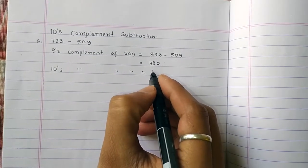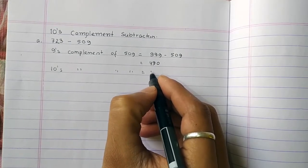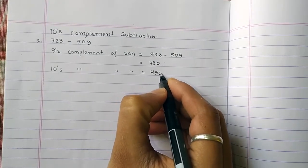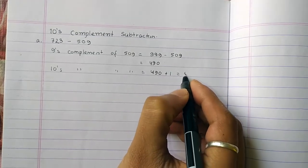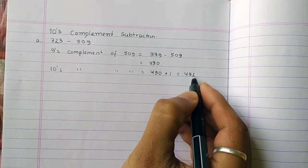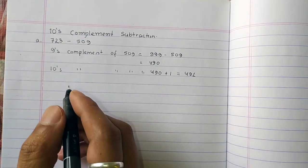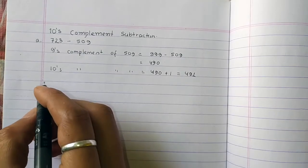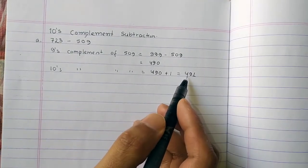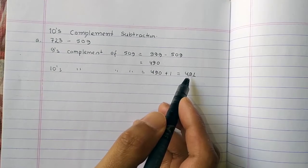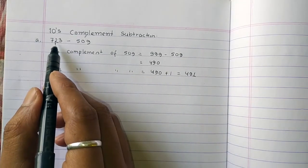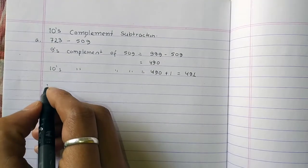The 10's complement of 509 is the 9's complement plus 1. So 490 plus 1 equals 491. The 10's complement is 491.